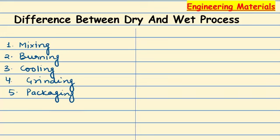So, the first step — mixing — can be done in two parts. We can do the dry process, or we can do the wet process. Today we are looking at the difference between the dry process and the wet process.